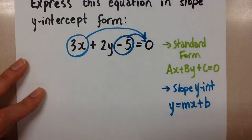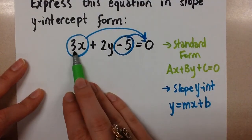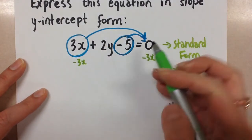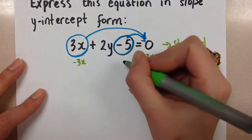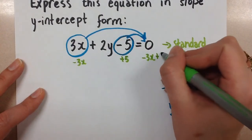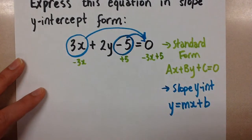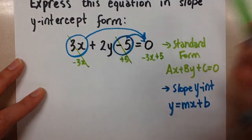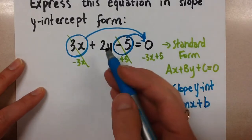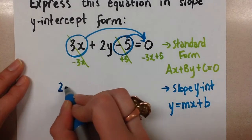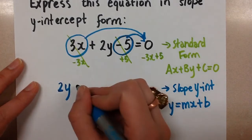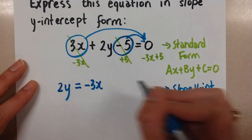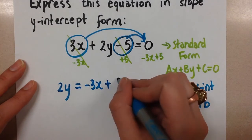So remember, opposite operations. If this is a positive 3x, we're going to move it to the other side by doing minus 3x on both sides. And if this is a minus 5, we're going to do plus 5 on both sides to move it over. So that is going to cancel this term and this term, which is what we want. So on the left side, we're going to be left with 2y. And on the right-hand side, we now have the negative 3x and the plus 5.